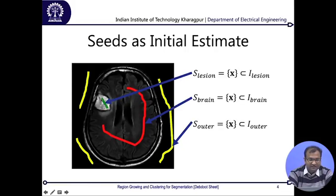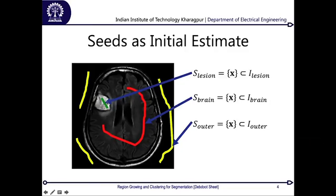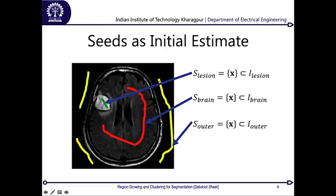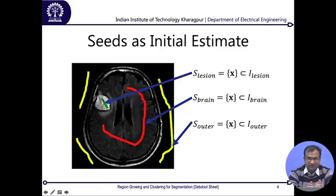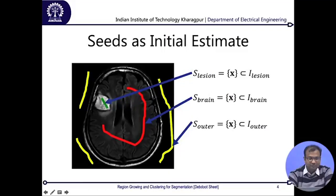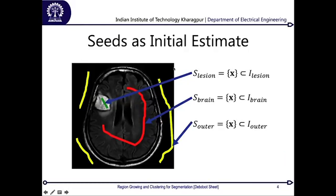The idea for region growing is that these seeds propagate — everything in the neighborhood looks at what its closest neighbor is and tries to expand. Starting from small independent pixels, it grows into a group of pixels or a cluster and eventually converges. At the convergence state, the whole lesion region is marked as lesion, the brain region as brain, and everything outer is marked accordingly. You can achieve this convergence by doing a raster scan — going pixel by pixel column-wise, row by row — finding the closest neighbor for each pixel and assigning the similar label, like a nearest-neighbor search.